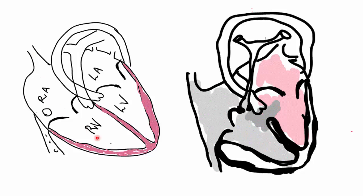From there it would go into the right ventricle. It goes across the pulmonary valve into the main pulmonary artery and into the branch pulmonary arteries and into the lungs. From the lungs, it will get oxygenated and come back into the left atria through the pulmonary veins.